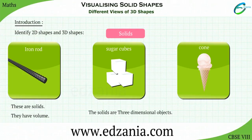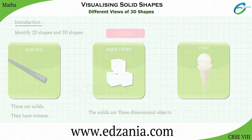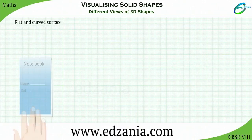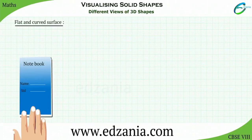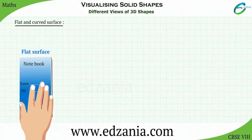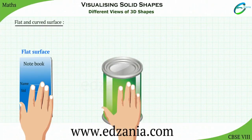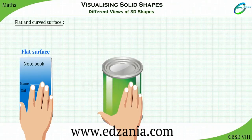3D objects have different plane surfaces. Let us observe the plane surfaces of objects. While touching the surface of a book, we feel a flat surface. Similarly, while touching the surface of a cylindrical tin, we feel a different surface. Can you tell me what is that surface of the tin? Curved surface.